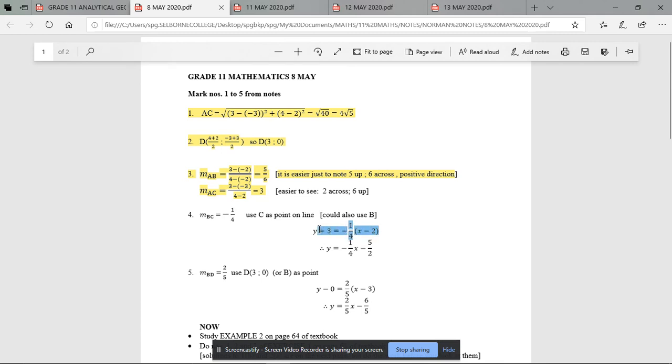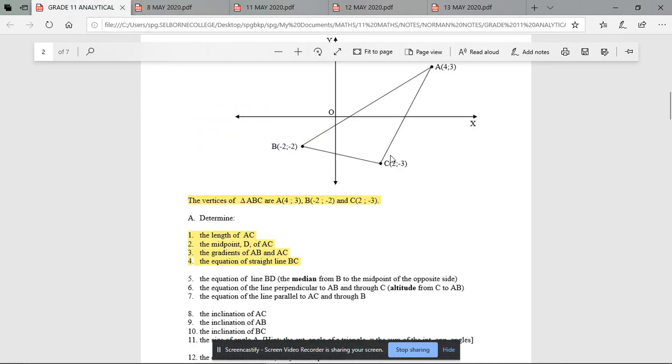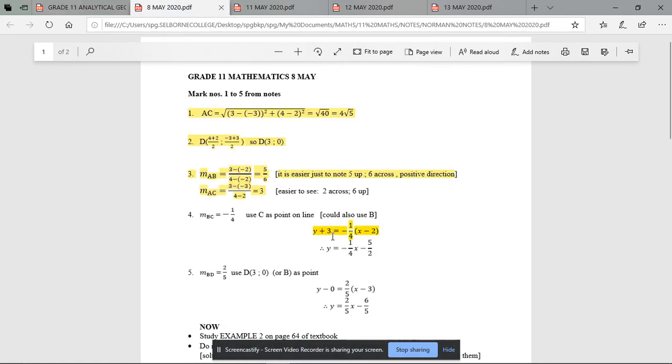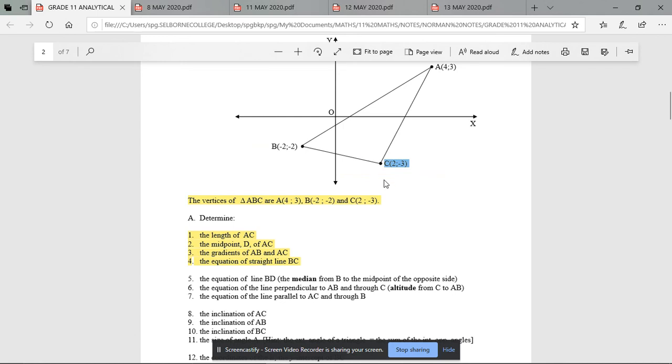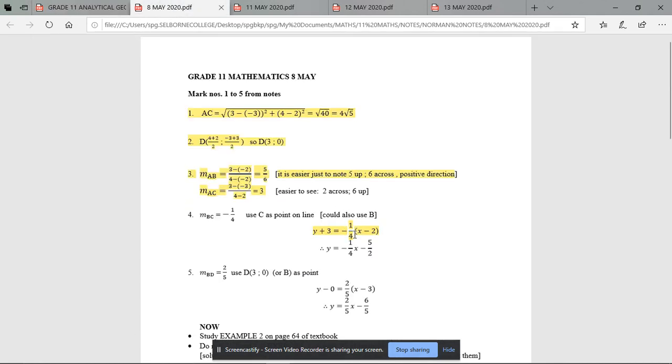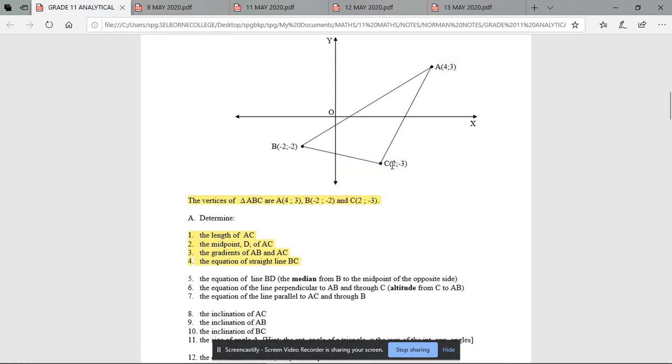Then this next line here is possibly new to some of you. We are going to now substitute a value into our formula Y minus Y1 equals M brackets X minus X1. So there is the M value, the negative a quarter, and we have substituted in 2 and negative 3 as it lies on the line we're dealing with. So Y plus 3, how come it's plus 3? Because minus minus 3 for the C value is equal to the M value and X minus 2 because there it was a 2.